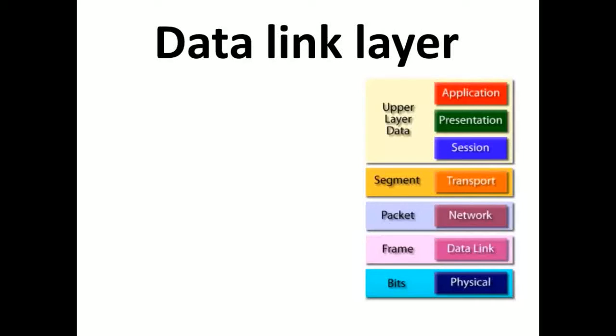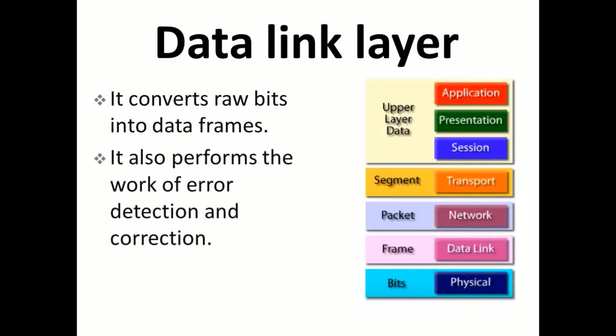After the physical layer, the next layer is the data link layer. Data link layer takes a stream of bits from the physical layer and passes them onto the upper layers. It converts the raw bits into data frames. It also performs error detection and correction in data or bits. After the error correction process, it transmits each frame separately to the next layer.